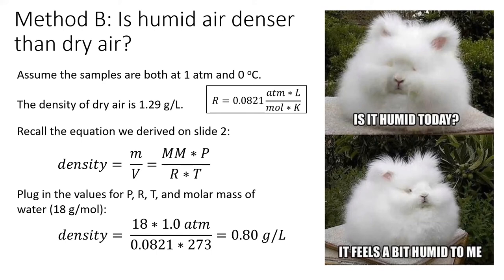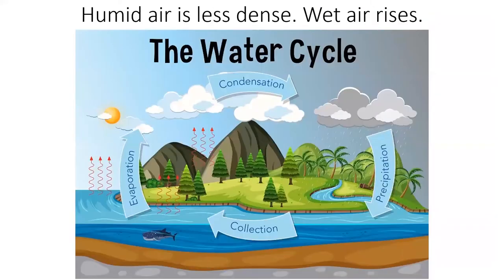Therefore, as water evaporates, it actually lowers the density of the air around it. Humid air's low density explains part of the water cycle. As air which passes over a body of water becomes more humid due to evaporation, and thus less dense, it starts to rise. Another reason air rises over bodies of water is from water's high heat capacity. Water can hold more heat than land, so air passing over warmer water heats up, which also decreases its density.